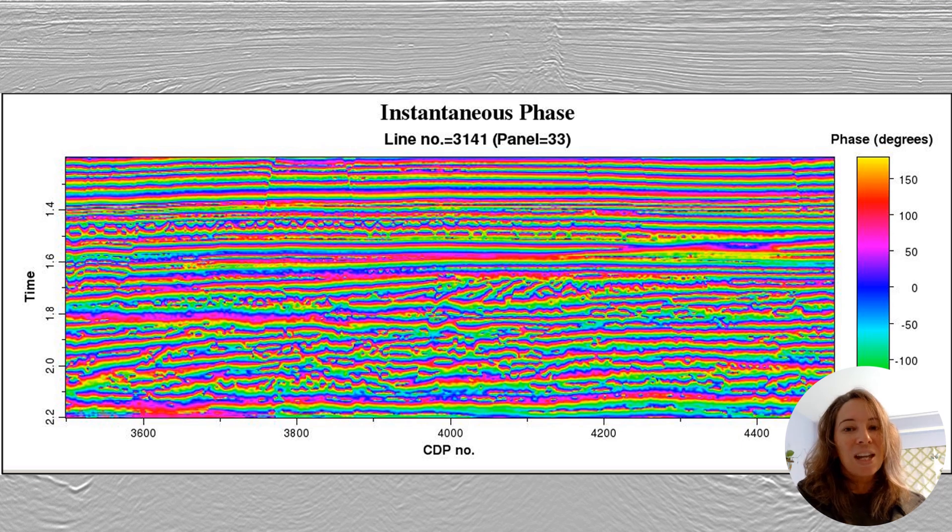The instantaneous phase, which ranges from negative π to positive π, or negative 180 to positive 180 degrees, highlights the continuity of events regardless of the amplitude. You can see here how it brings out subtle stratigraphic features that are barely visible in the amplitude data.